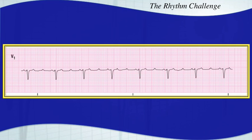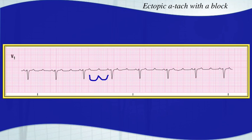This one's a little bit more difficult. Ectopic atrial tachycardia with a block — you have a 3-to-1 block. A lot of times this is due to dig toxicity — medication induced.